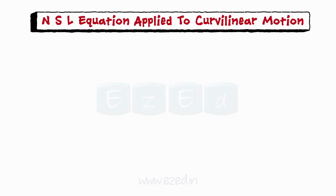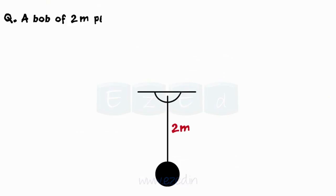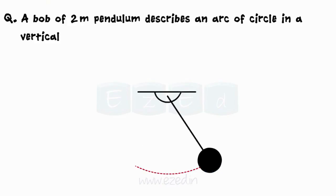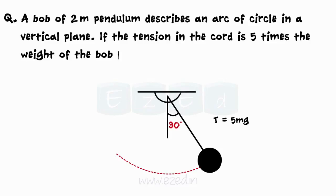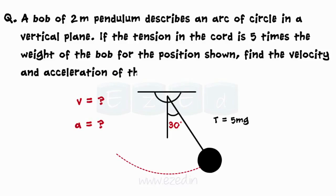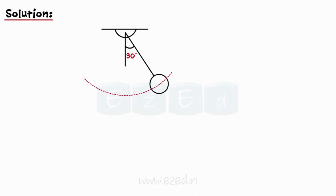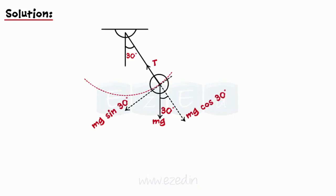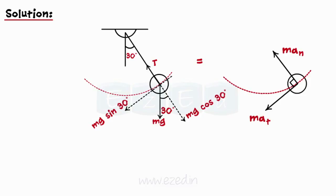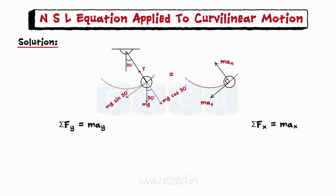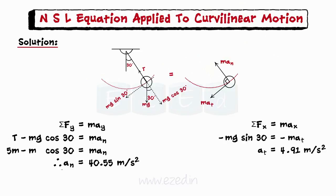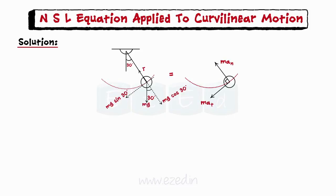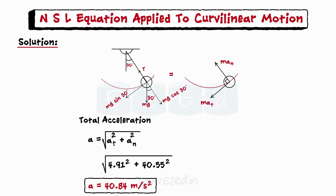Consider a problem on curvilinear motion applying Newton's second law. A bob of a 2-meter pendulum describes an arc of a circle in a vertical plane. If the tension in the string is 5 times the weight of the bob for the position shown, find the velocity and acceleration of the bob. The bob is performing curvilinear motion. Step 1 — draw the free body diagram showing all forces. Step 2 — draw the kinetic diagram showing the M-a vector split into normal and tangential components. Step 3 — apply Newton's second law in the y and x directions. We get acceleration in the normal and tangential directions, then evaluate the total acceleration and velocity of the bob.